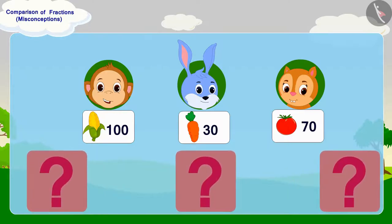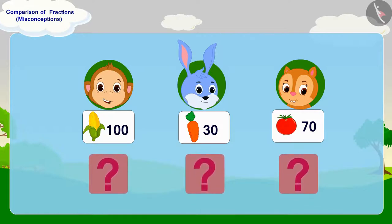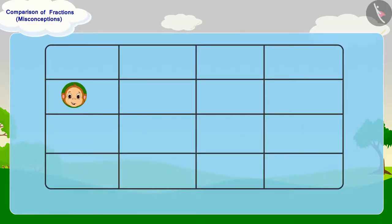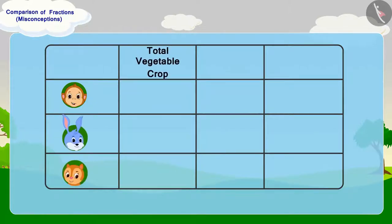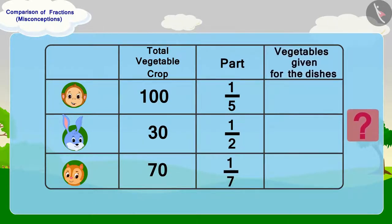So what shall we do now? To solve the confusion between the three of them, we have to find out the number of vegetables given by each of them. The total quantity and share of vegetables grown in the crops of Babban, Banni and Chanda is written. Can you find the number of vegetables given by all three from these parts? If you want, you can stop the video and find the answer.